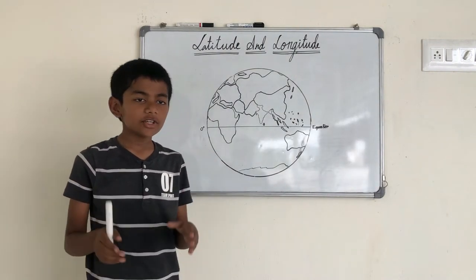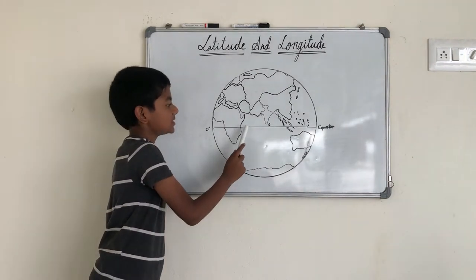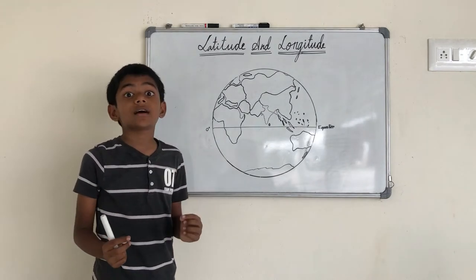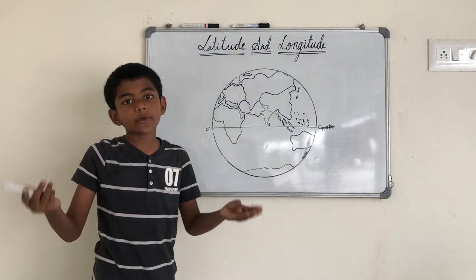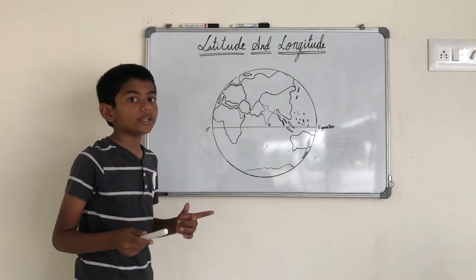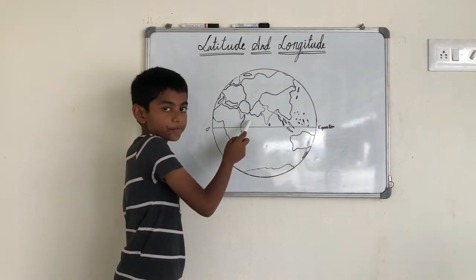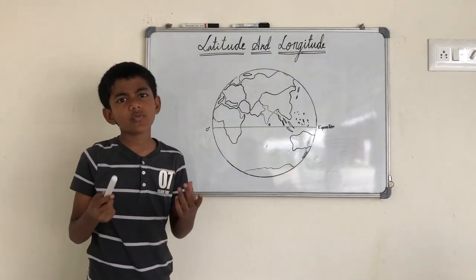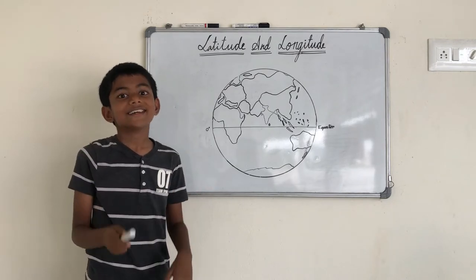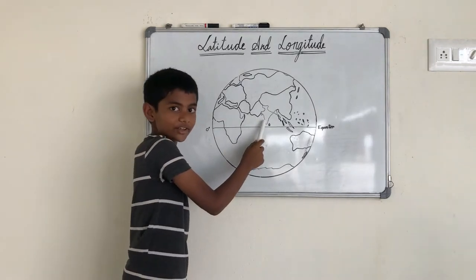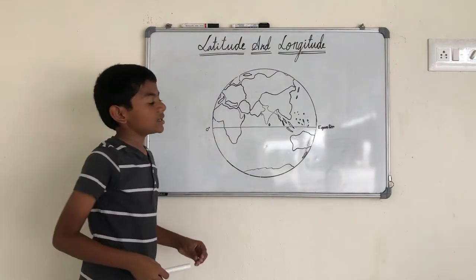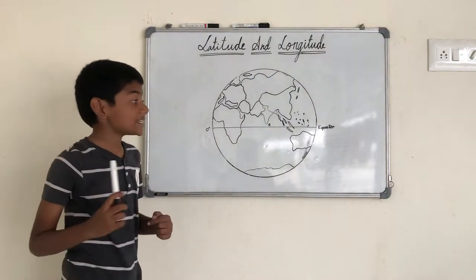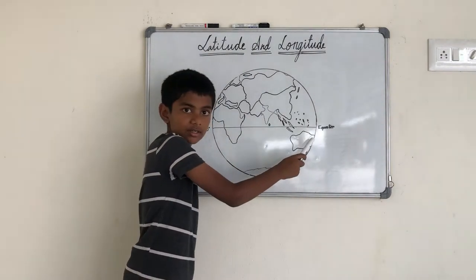First, do you know what this line is? This line is called the equator. The equator is an imaginary line which separates the earth into two halves — one is the northern hemisphere and the other one is the southern hemisphere. Do you know in which hemisphere India is? Yes, it is in the northern hemisphere. This equator is marked as zero degrees.